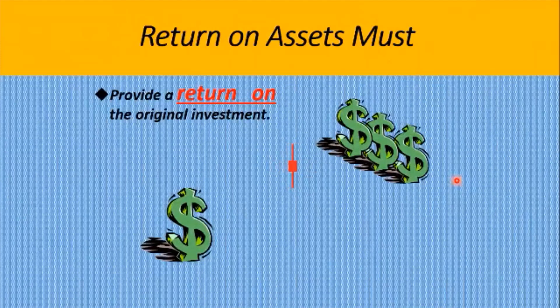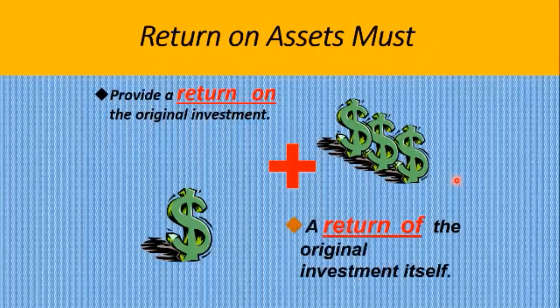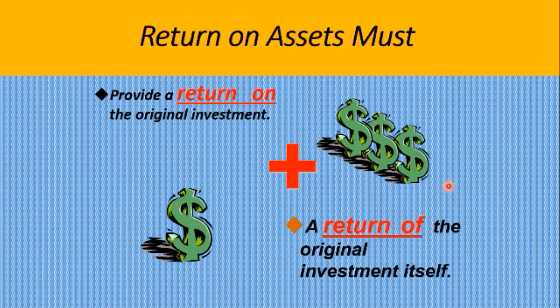Return on assets: to provide returns on assets, the purpose of your investment must provide a return on the original investment, plus a return of the original investment itself. An example: the $5,000 land rented out — you must not just return $750 each year; you must also recover the $5,000 itself.